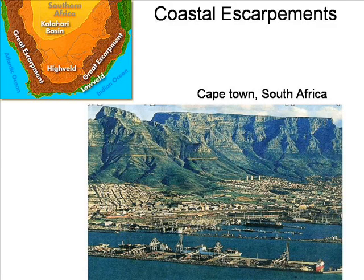Cape Town, South Africa — or the Tavern of the Seas, as the old sailors called it. Does the feature behind the city look familiar? The top of the escarpment is called Table Mountain, and is a flat planation surface, just like the previous photographs. Water has flowed as a sheet off the top, cutting channels and depositing debris on what is now the coastal plain.